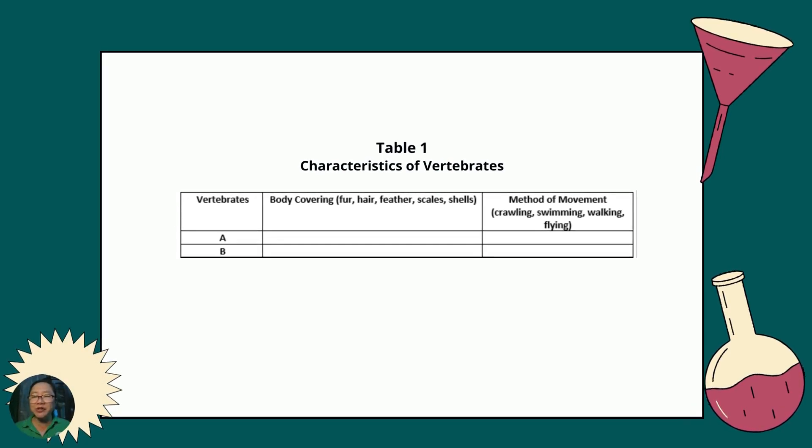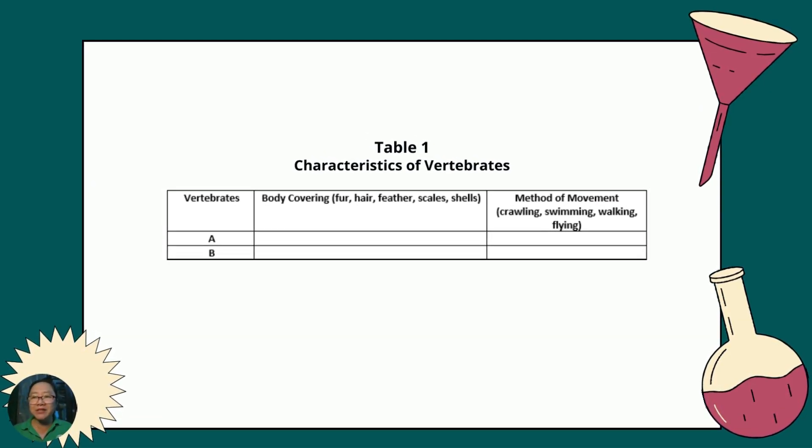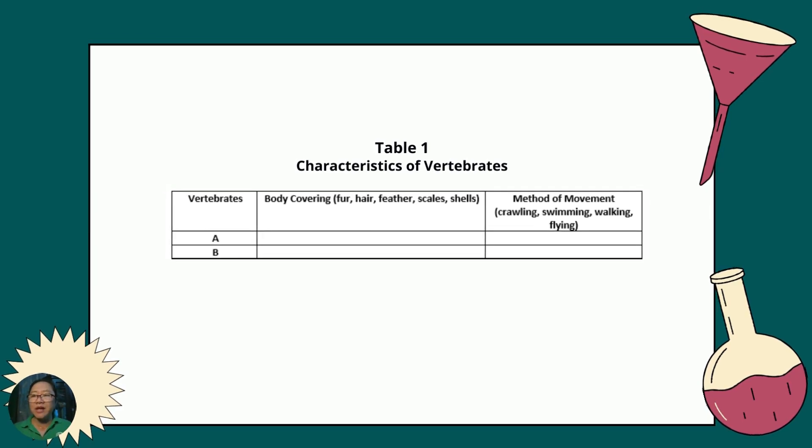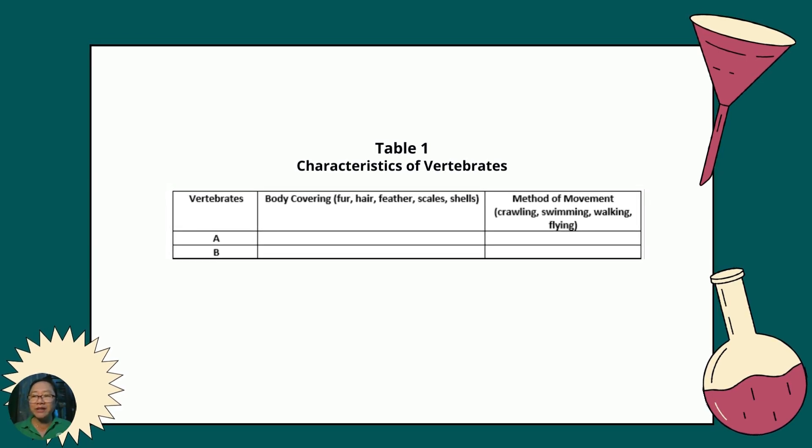Once we are done sorting our animals, prepare a table like this where you will tabulate your observations. In the first column, we write the sets or groupings of our animals A and B. In the next columns, we write the properties we want to observe, like body coverage and method of movement. These are just examples. You may write in these columns the properties that you like to observe.